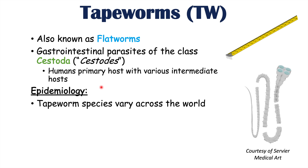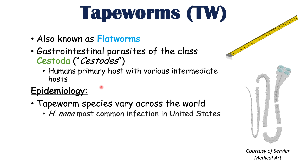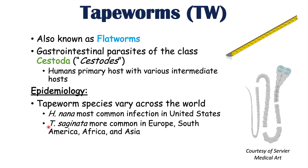Tapeworms are found all around the world, but the prevalence of each species varies depending on geographic location. For instance, the tapeworm known as Hymenolepis nana is most commonly found in the United States, whereas Taenia saginata is more common in Europe, South America, Africa, and Asia.